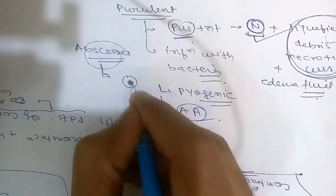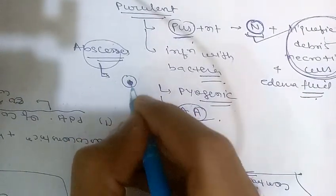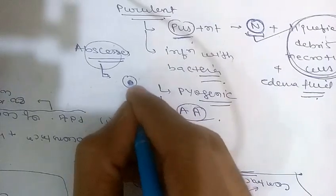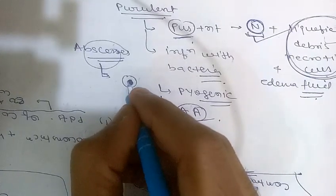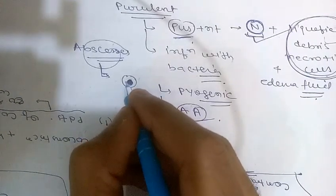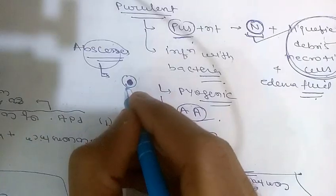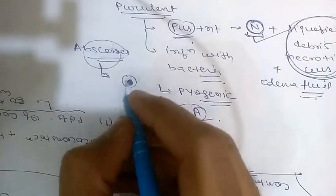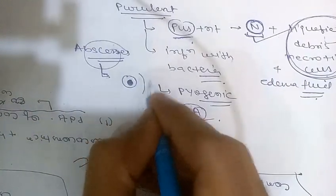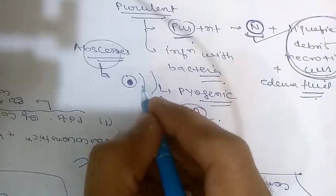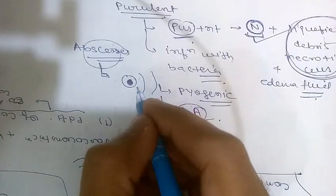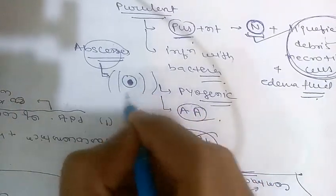The central region of an abscess appears as a mass of necrotic tissue cells and leukocytes. There is usually a zone of preserved neutrophils around this necrotic focus. Outside this region there may be vascular dilation and parenchymal and fibroblastic proliferation.